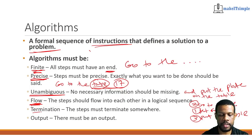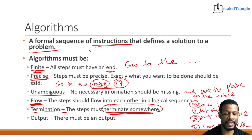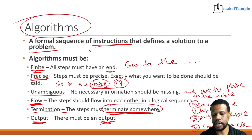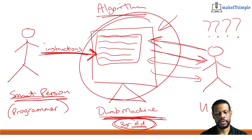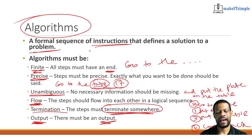Termination means the steps must terminate somewhere — there must be an end. If I say get the food, go to the table, put it on the table, there must be a final instruction that says 'come back here' — that clearly says we are terminating right here. And the last thing an algorithm must have is an output. If there isn't an output, or something that proves there was an input, process, and output, you didn't really do an algorithm. Always remember: you are the smart person, the programmer, giving instructions to a dumb machine likened to a three-year-old. The steps must be finite, precise, unambiguous, have proper flow, terminate, and there must be an output.